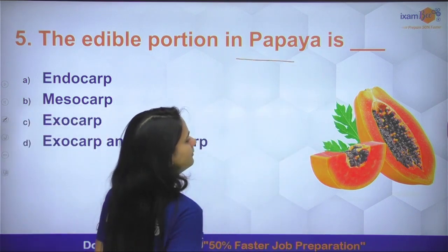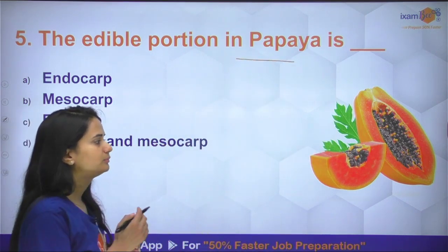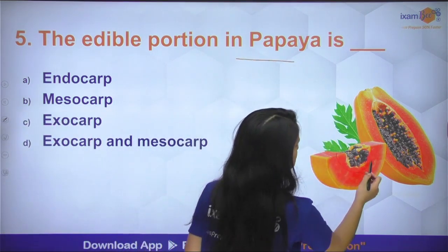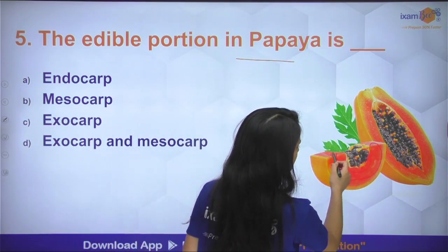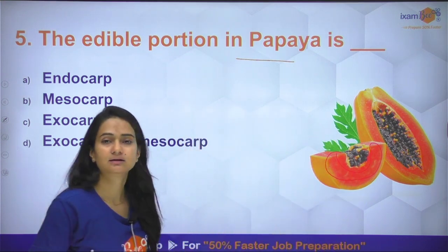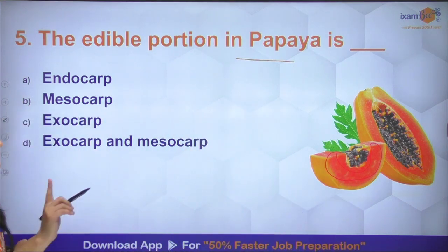Question number 5: papaya का edible portion कौन सा होता है? बीच वाला जो portion है, वो खाया जाता है — that is the mesocarp।